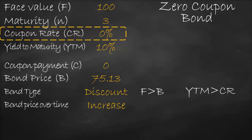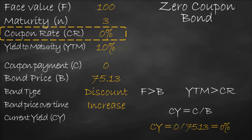What is the current yield? The current yield formula is coupon divided by bond price. Since the coupon is zero for a zero coupon bond, zero divided by 75.13 gives us zero percent. Therefore, for a zero coupon bond, the current yield will always be zero percent.